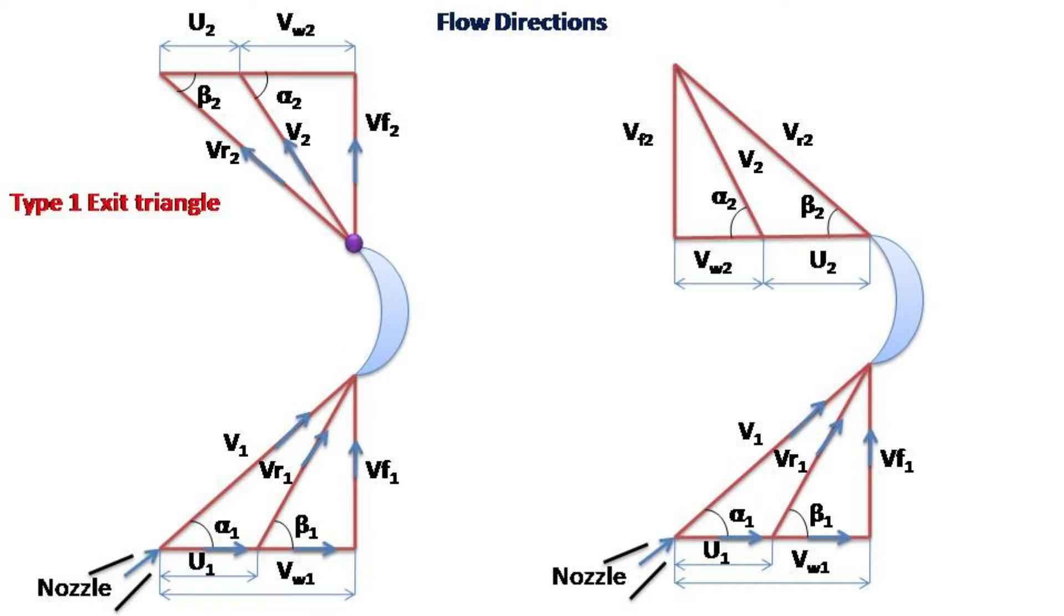In type 1 exit triangle, the exit velocity splits into various velocities and they move from apex towards the base corner of the triangle.